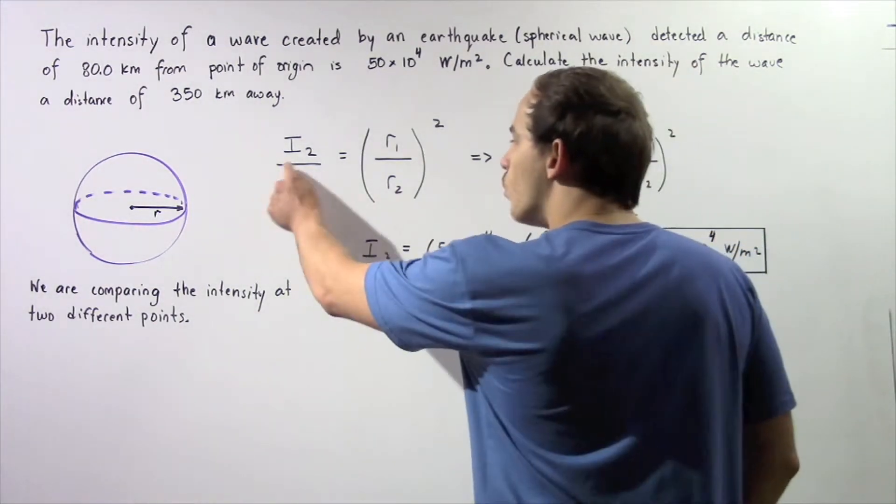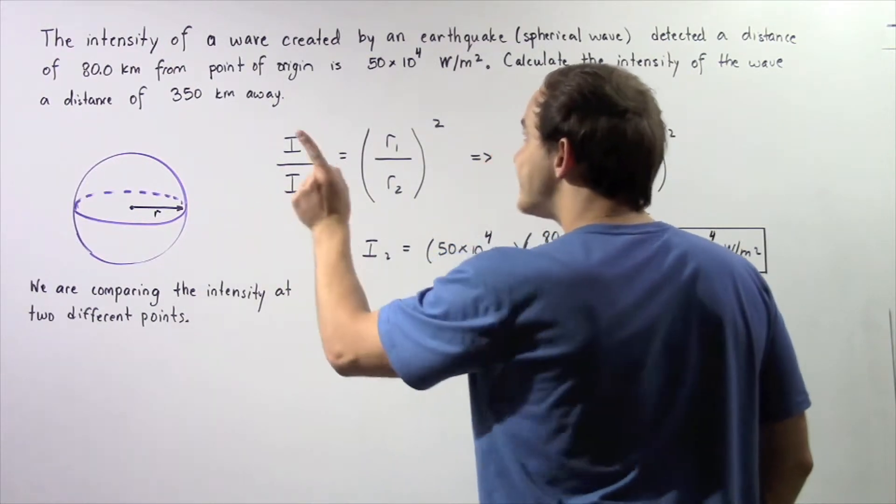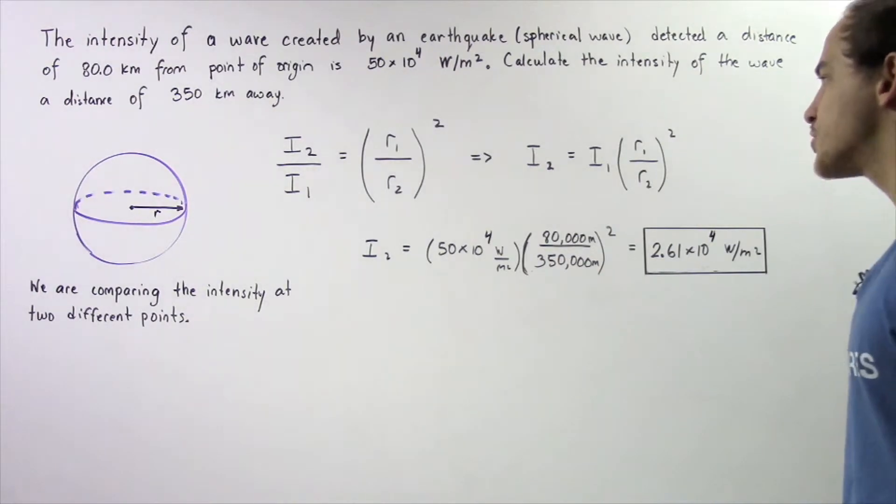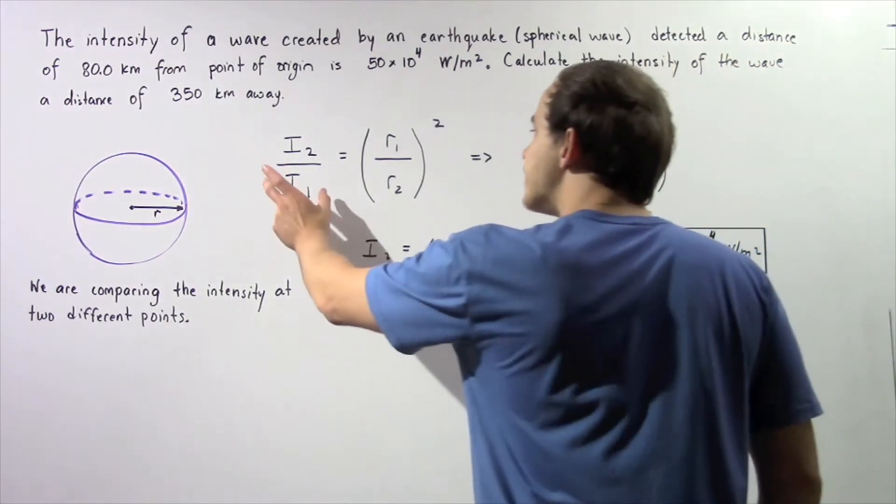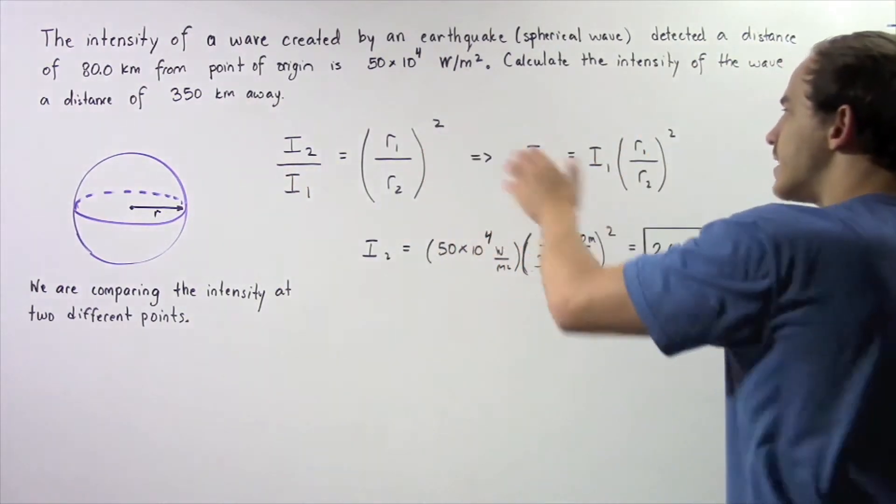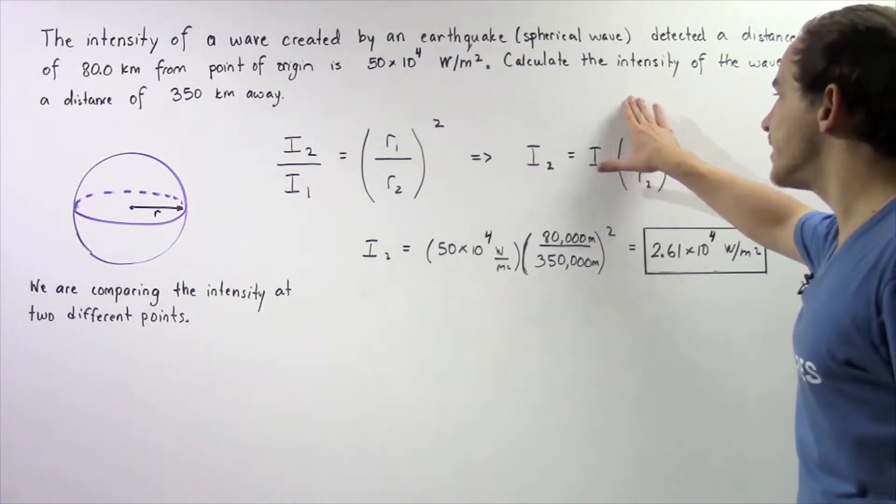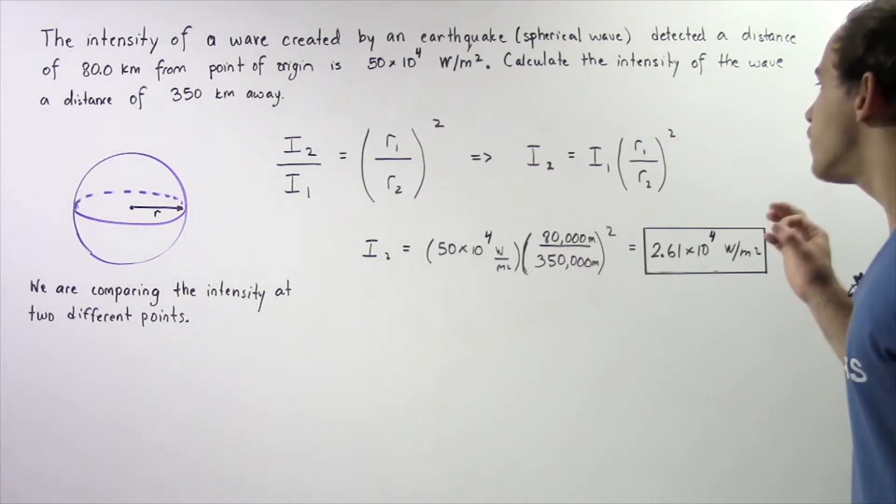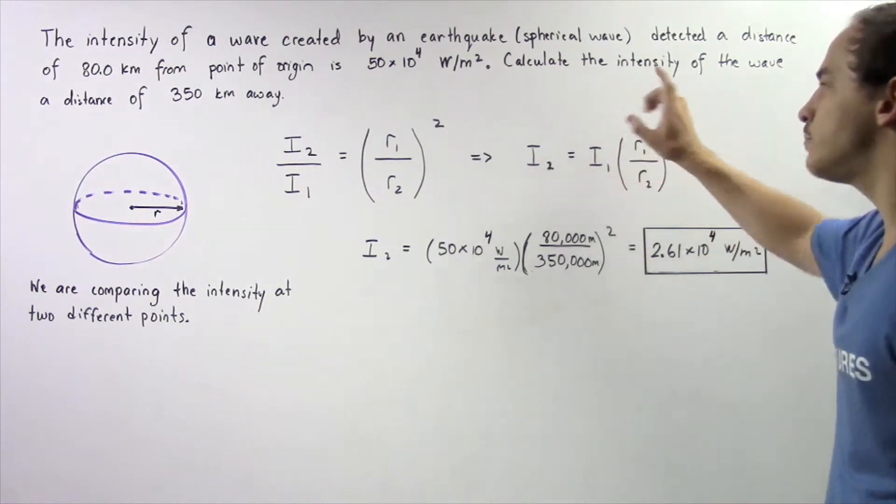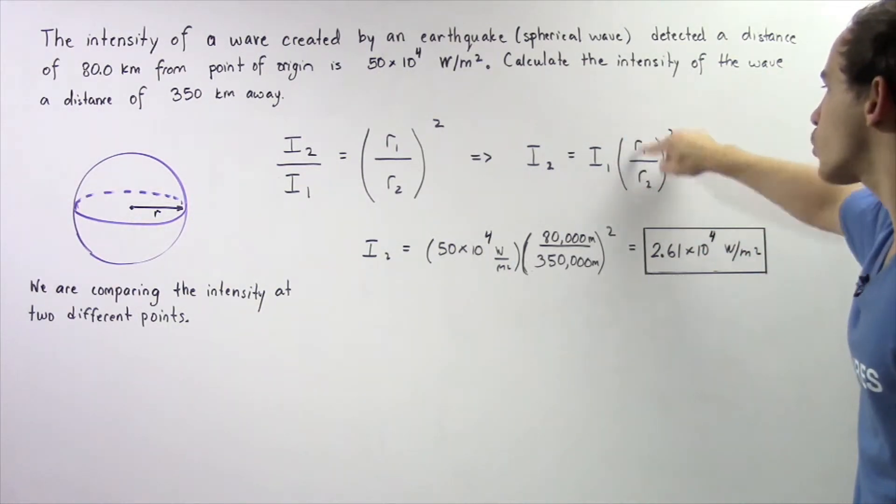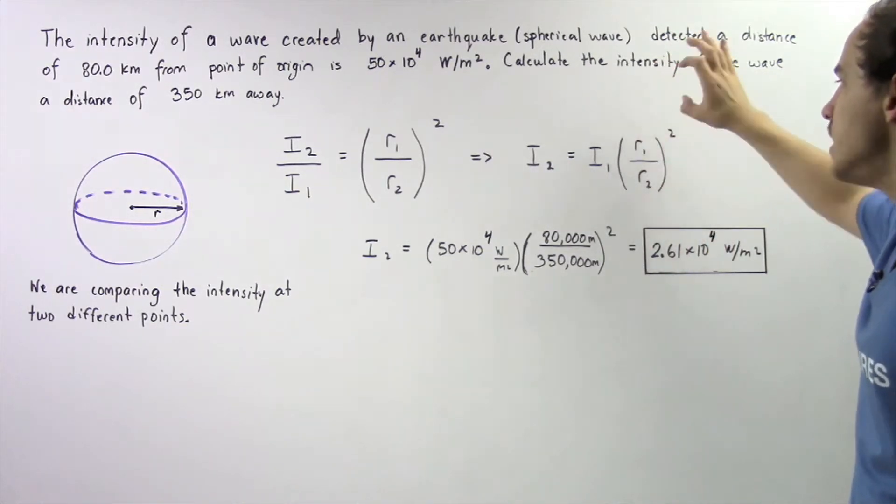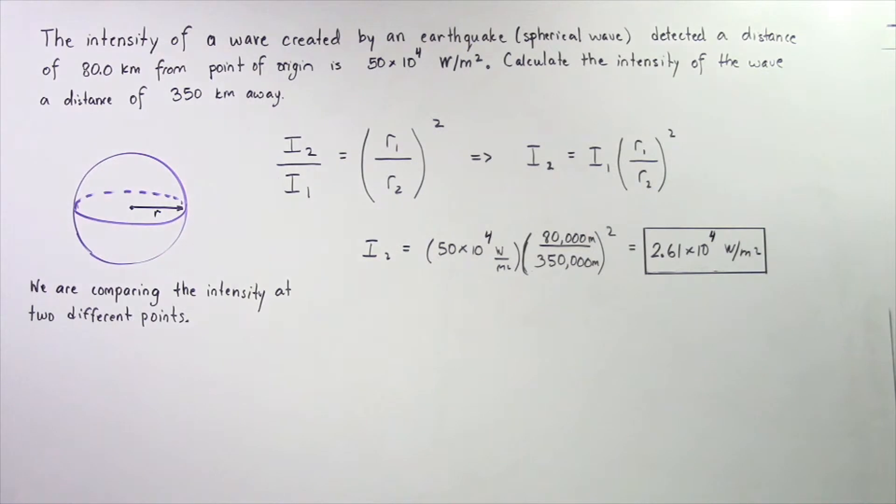Now, we also know what our I1 is. The I1 is given to be 50 times 10 to the 4 watts per meter squared. So if we bring this to the right side of our equation, we get that the intensity at position 2 is equal to the product of the intensity at position 1 and the square of the ratio of the radii.